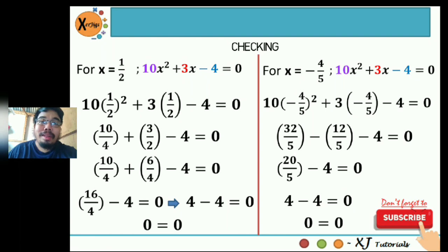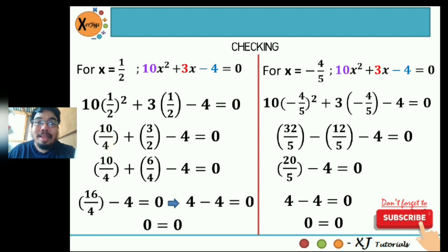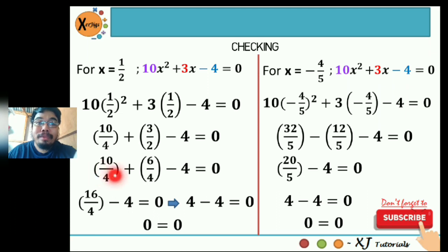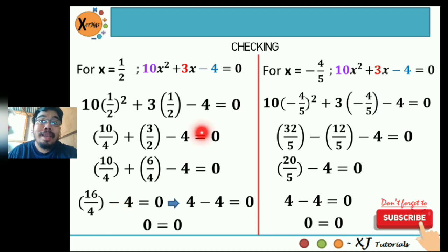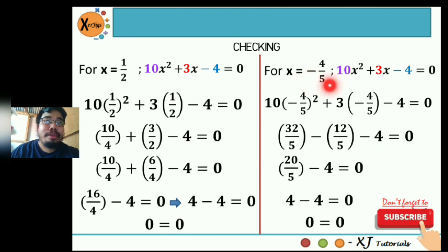For checking x equals one-half, we substitute into the original equation 10x squared plus 3x minus 4 equals 0. We get 10 times one-fourth plus 3 times one-half minus 4 equals 0, which is 10 over 4 plus 6 over 4 minus 4 equals 0. The sum of the similar fractions is 16 over 4, which equals 4. So 4 minus 4 equals 0, giving 0 equals 0. This is a solution.